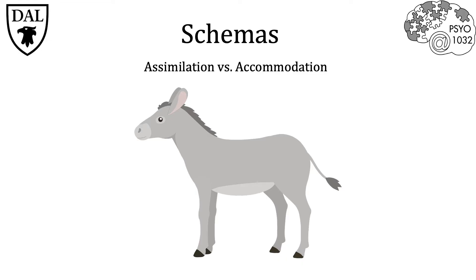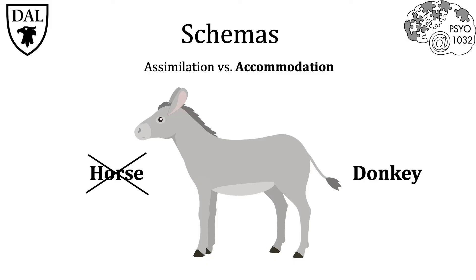For example, say a child sees a donkey for the first time. With assimilation, the child might fit the donkey into an already existing schema they have of a horse. Whereas if the child used accommodation, the child would change the existing schema of the horse, acknowledging that this is actually not a horse, but indeed a donkey.